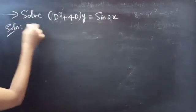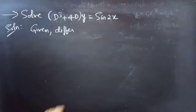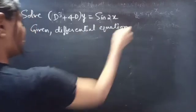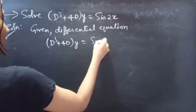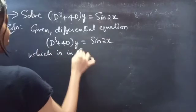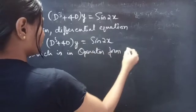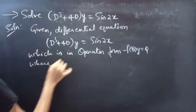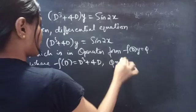We are given a differential equation in operator form: D³ + 4D into y equals sin2x. We write this as F(D)·y = Q, where F(D) = D³ + 4D and Q = sin2x.